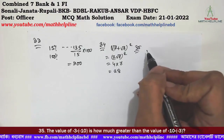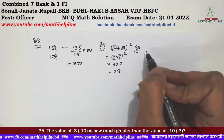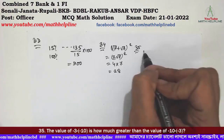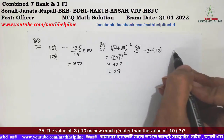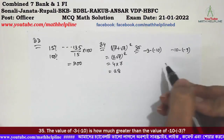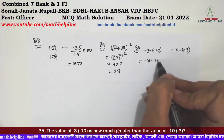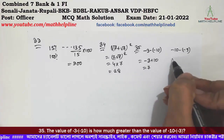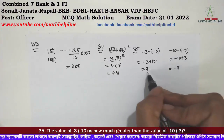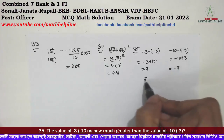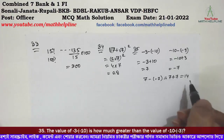The value of minus 3 minus minus 10 is how much greater than the value of minus 10 minus minus 3? So minus 3 minus minus 10 minus minus 10 minus minus 3. The value of minus 1 minus minus 7 equals 7 plus 7 equals 14. Answer: 80%.